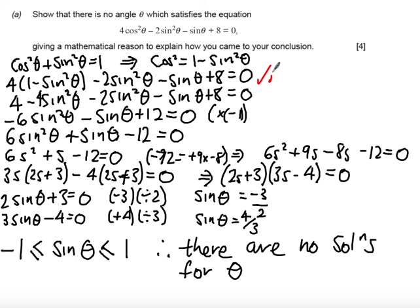Part A: You get a method mark if you correctly demonstrate how to substitute 1 - sin²θ for cos²θ. Please remember to show the actual substitution. There is then a method mark if you've demonstrated expansion of the bracket and collecting terms to form a quadratic. There is an answer mark if you've got the two correct solutions for sinθ. Finally, you get an explanation mark if you've stated that sinθ must lie between -1 and 1, and for this reason there are no solutions.